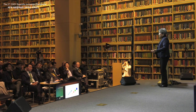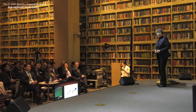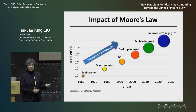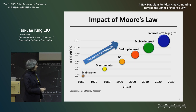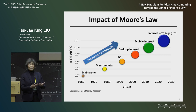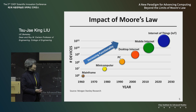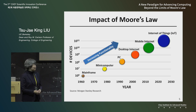Everything that we interact with will have some computing capability to interact with the environment and to communicate with other things and with us. We project that in the future there will be over 100 billion devices or even 1 trillion devices within the next 20 years — a much larger number than the number of people.